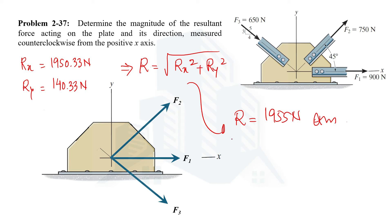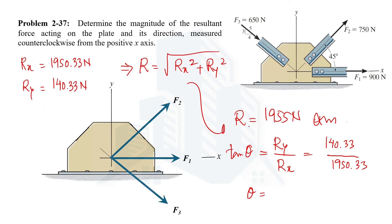We also need to calculate the direction of the resultant force. Using the formula tan θ = Ry / Rx, where θ is measured counterclockwise from the positive x-axis, we substitute both values and get θ = 4.12 degrees. This means the resultant force acts at 4.12 degrees from the positive x-axis.